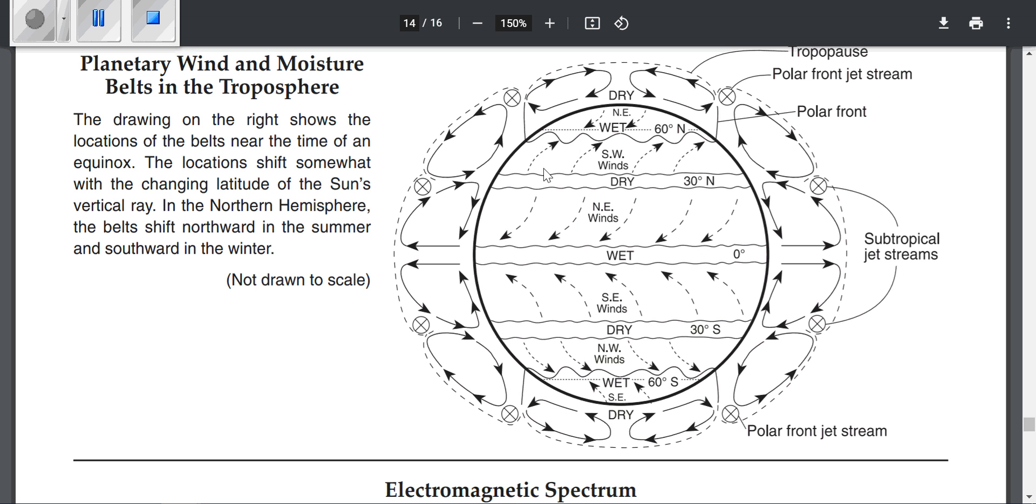Okay, so this is the Earth right here. This is the surface of the Earth. You can see the latitudes: the equator is 0, 30 north, 60 north, and then 90 is not labeled—that's the North Pole or South Pole.